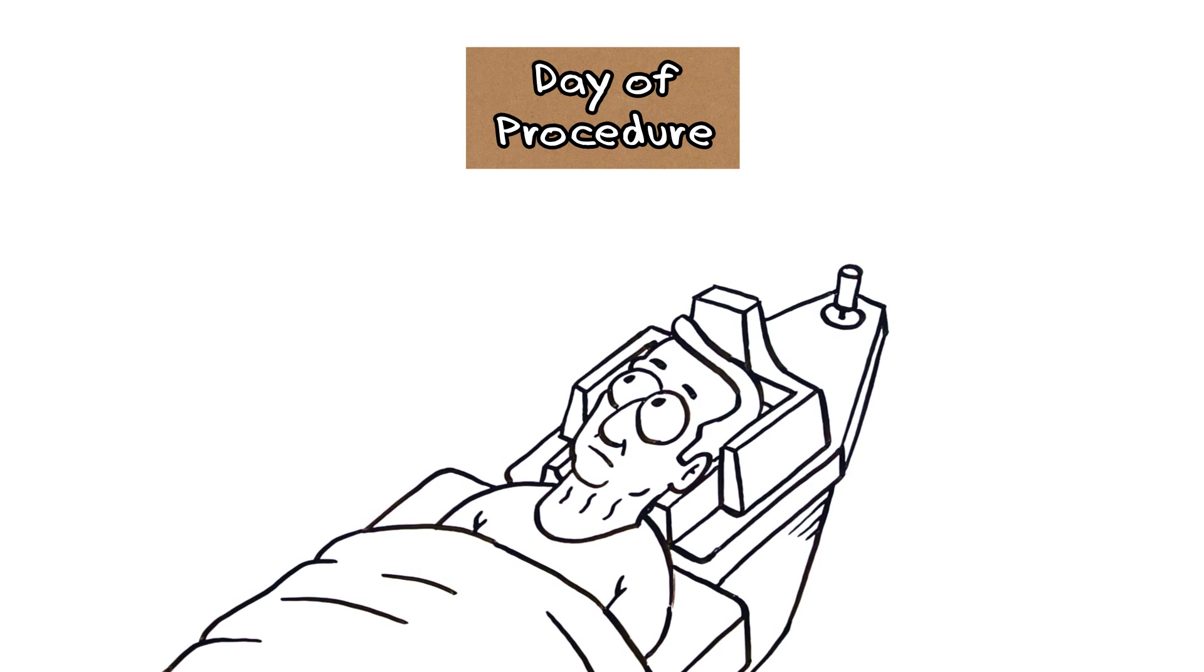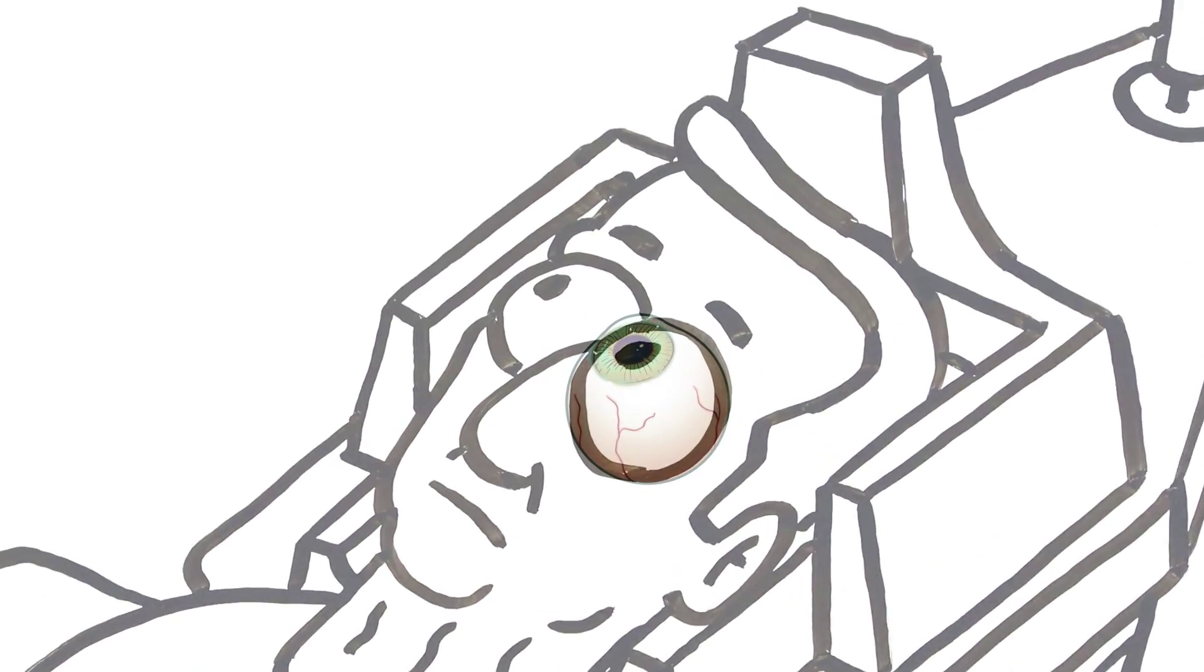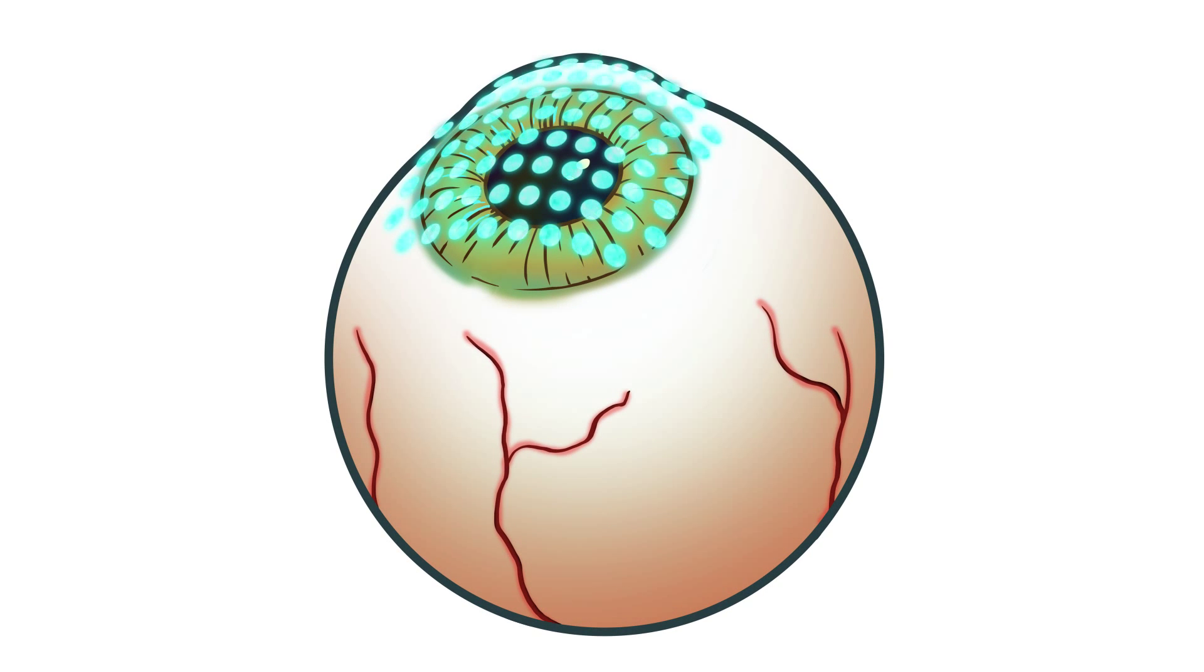On the day of the procedure, numbing and dilating drops are administered, as well as a sedative to help you relax. Dr. Stewart then uses specially focused light from a femtolaser to create small incisions in the cornea that correct for astigmatism.